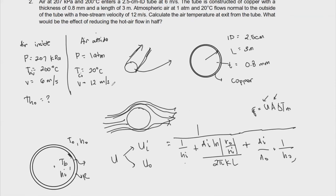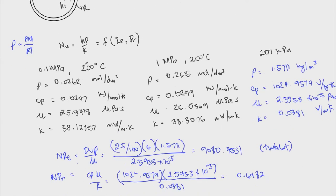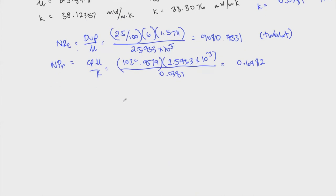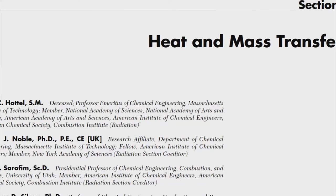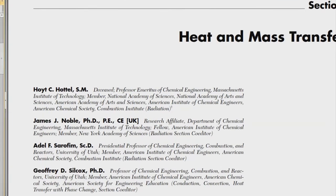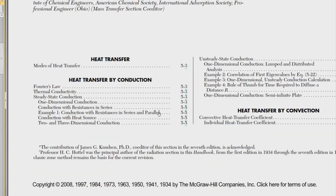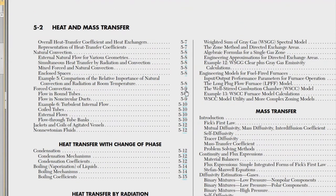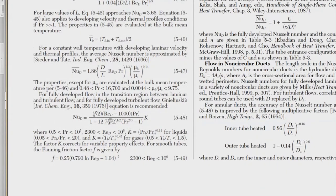So that's why we used 200°C. Again, film temperature is used for natural convection when the flow is external. Bulk temperature is used when you're dealing with fluids that are forced inside a pipe. Now we have the Reynolds number and Prandtl number. We'll be using the Gnielinski-type equation for turbulent flow in a pipe — that's just Chapter 5, forced convection.